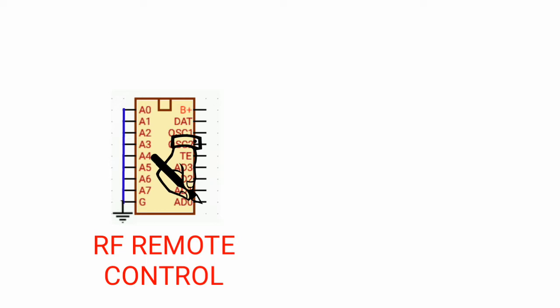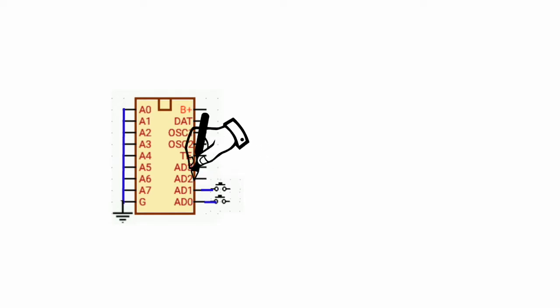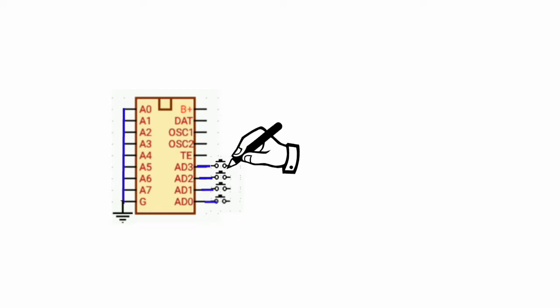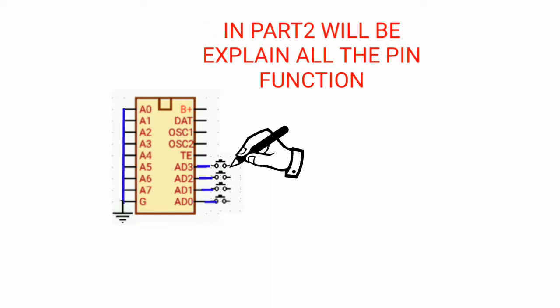Connect AD0 to the momentary switch first. Then connect AD1 to another momentary switch. Connect AD2 to another momentary switch. Then connect AD3 to another momentary switch. All the opposite sides of the momentary switches will be connected to the ground.